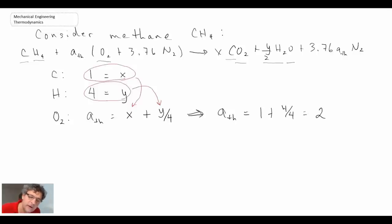Theoretical air in this case is 2. And finally, for diatomic nitrogen, just for sake of completeness, I'll go to a dark green pen. Diatomic nitrogen is there and there. It's not doing anything in this reaction, so all we have is 3.76a theoretical on the left equals 3.76a theoretical on the right.